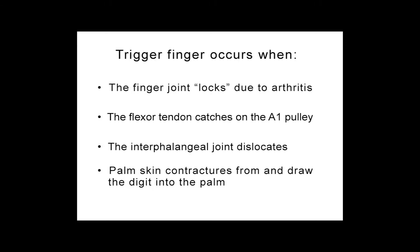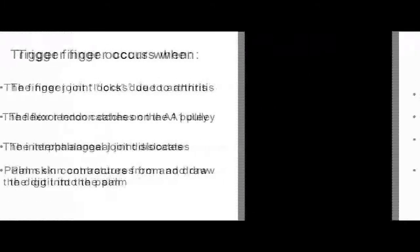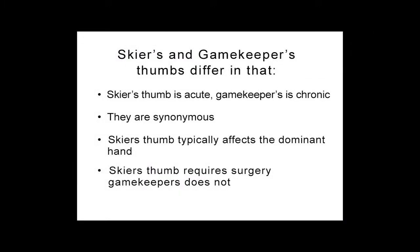Trigger finger occurs when: A, the finger joint locks due to arthritis; B, the flexor tendon catches on the A1 pulley; C, the interphalangeal joint dislocates; or D, palm skin contractures form and draw the finger into the palm. Skiers' and gamekeepers' thumbs differ in that: A, skiers' thumb is acute, gamekeepers' is chronic; B, they're synonymous — there's no difference; C, skiers' thumb typically affects the dominant hand; or D, skiers' thumb requires surgery, gamekeepers' does not. Let's go ahead and do the talk and revisit the questions at the end.